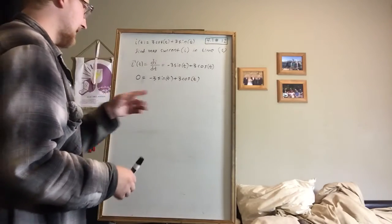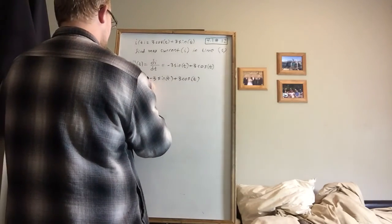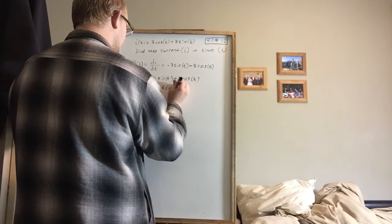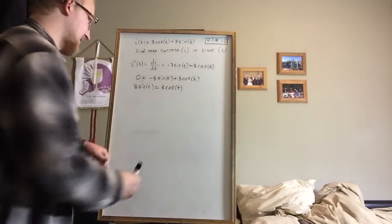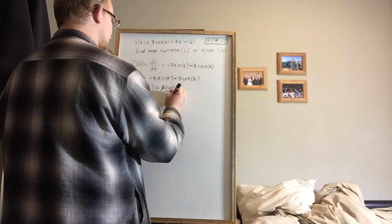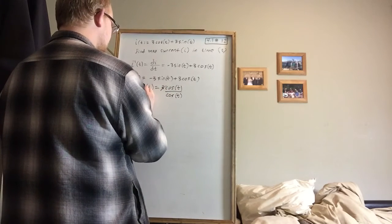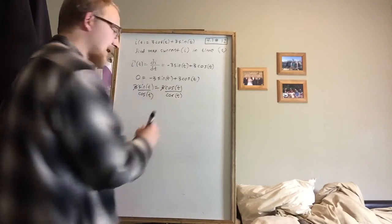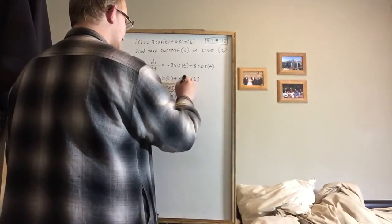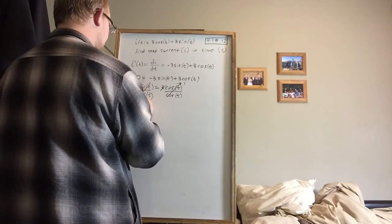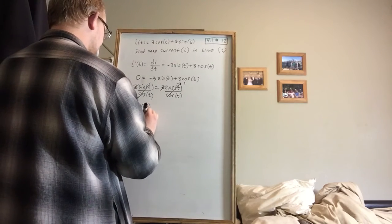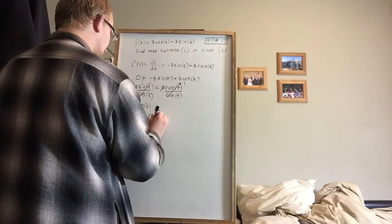And so I kind of like the idea of adding the sine over. So 3 sine t equals 3 cosine t. Divide both sides by 3, and the 3's cancel. And then let's go ahead and divide both sides by cosine t. Because we're dealing with two trig functions here. And it's a lot easier to deal with trig functions if we can narrow it down to just 1. So cosine divided by cosine is 1. And sine divided by cosine is tangent. So we've shown that tangent of t equals 1.